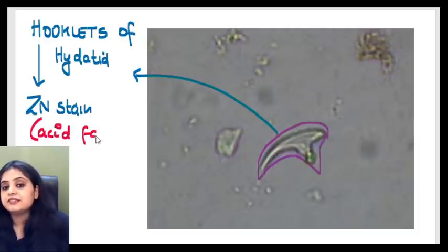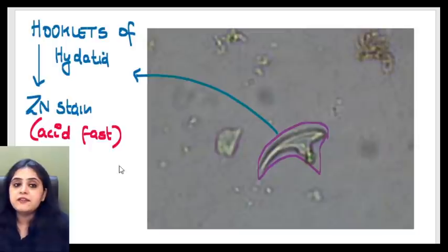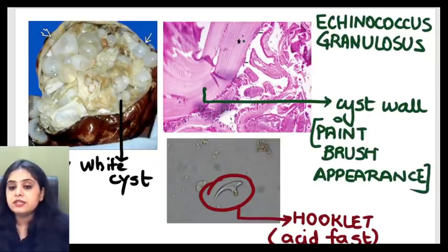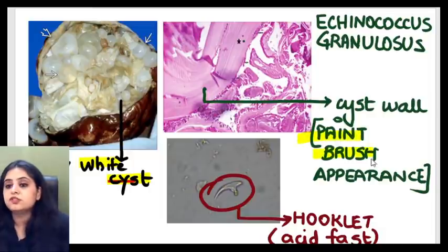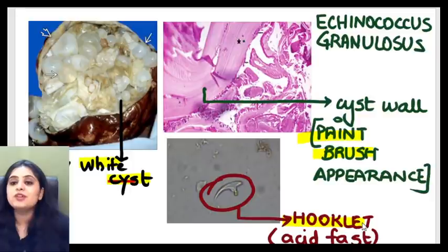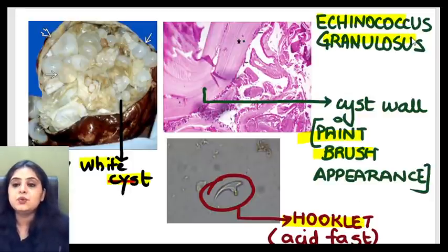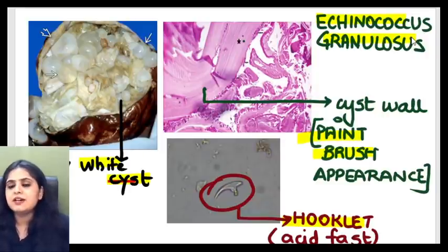Putting everything together: you've got a pearly white cyst, the paintbrush appearance of the cyst wall, and the hooklets of hydatid which are acid fast. The organism we were talking about is the dog tapeworm — that is Echinococcus granulosus. That's the image collage for the day.